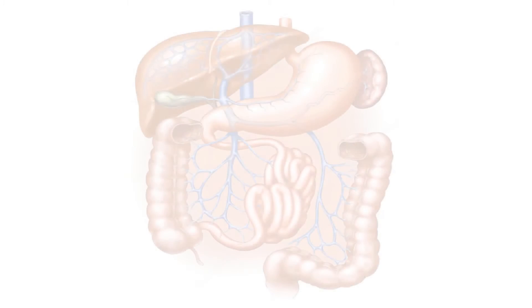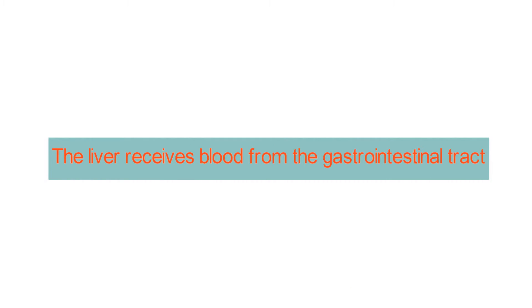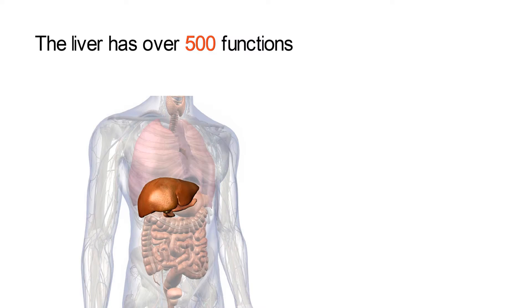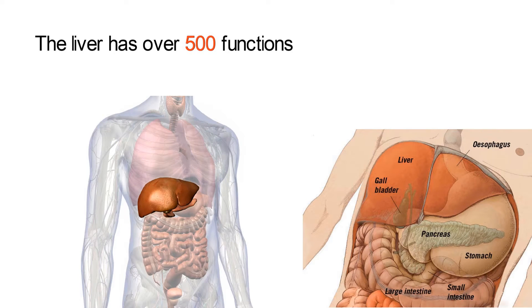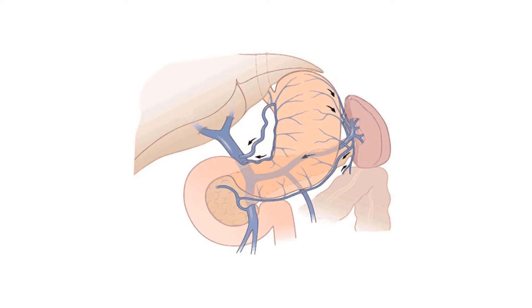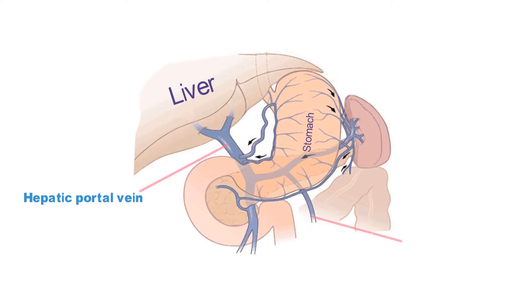This video will cover the hepatic portal system. Number one: the liver receives blood from the gastrointestinal tract. The liver has over 500 functions, and in order to perform these functions, it is important that the liver receives blood from numerous organs to receive the biomolecules necessary for its many tasks. Blood flows from all the major organs of the gastrointestinal tract into the liver via the hepatic portal vein.